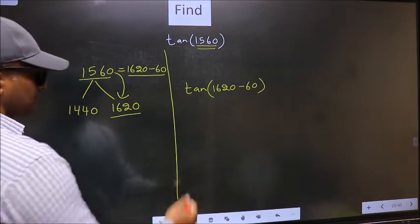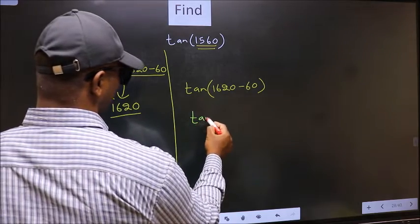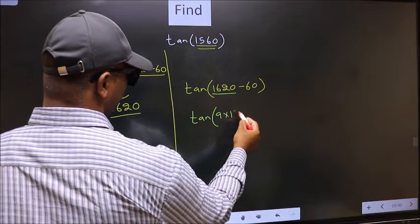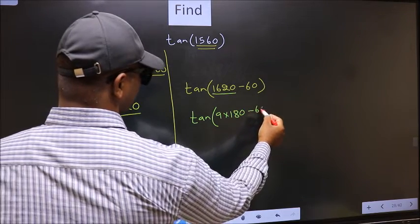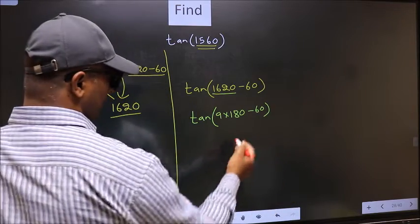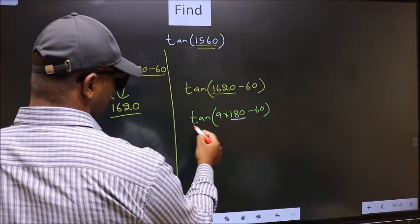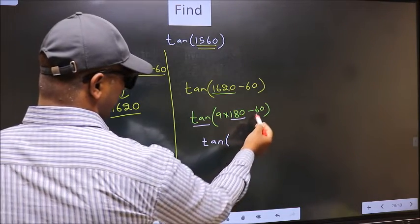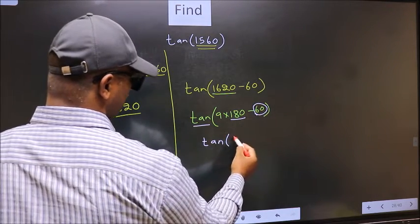Next, tan. In place of this, now we should write 9 × 180 minus 60. Next, here we have 180. So tan is not going to change. It will remain tan. And inside, we get this angle 60.